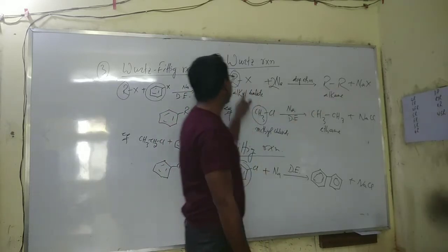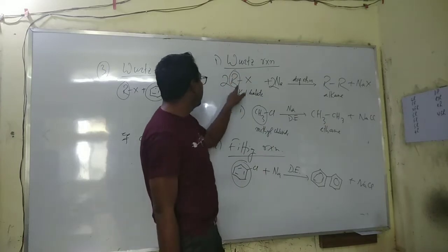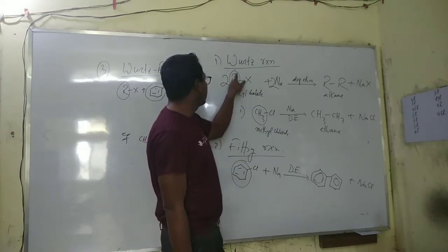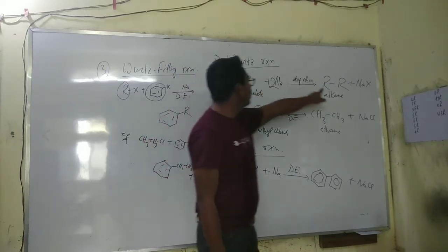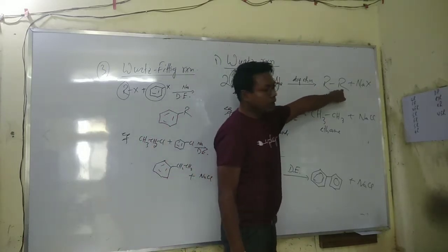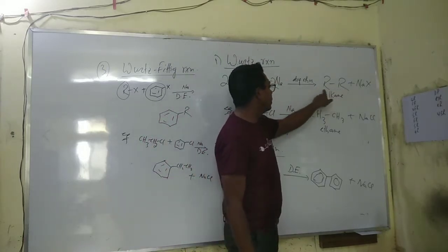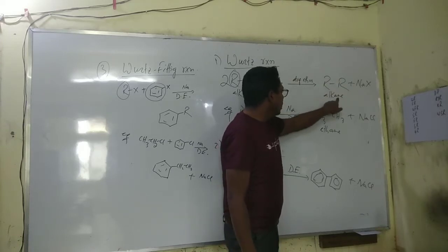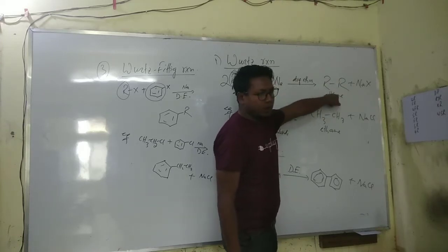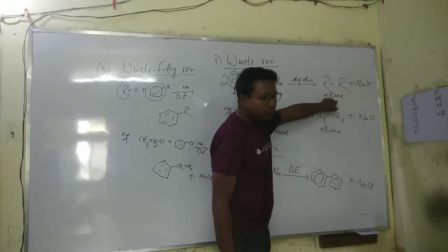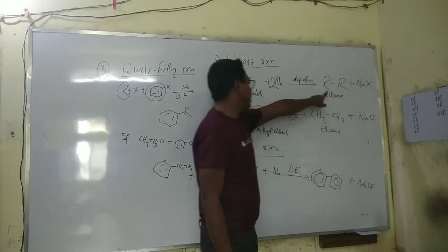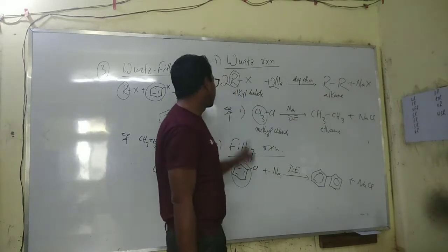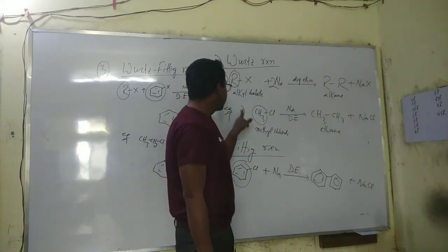The alkane formed is from three alkyl branches combining to form alkane. This tells us the number of alkane carbons — specifically, the number of carbon atoms present in the product.